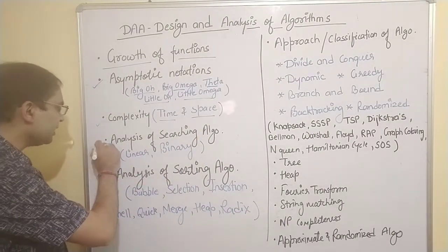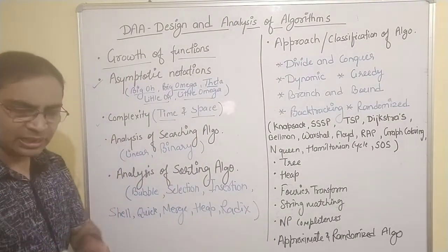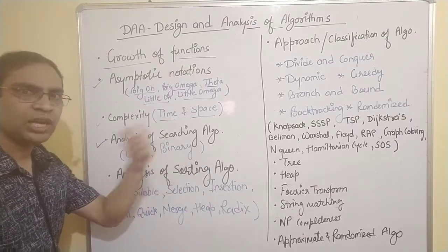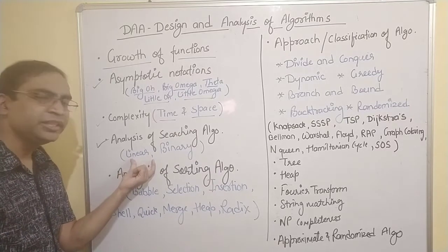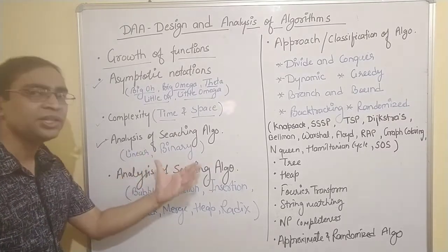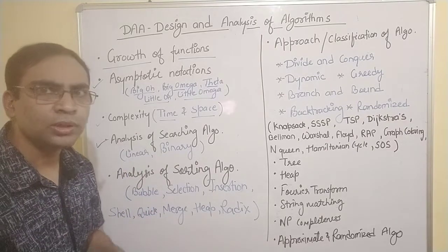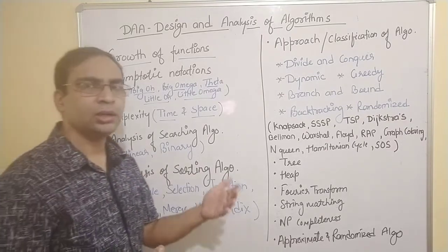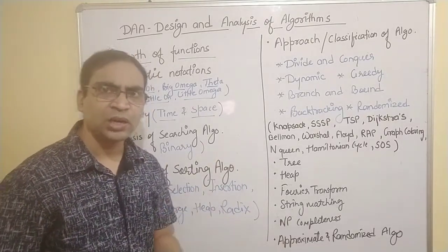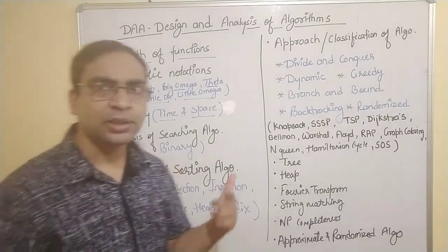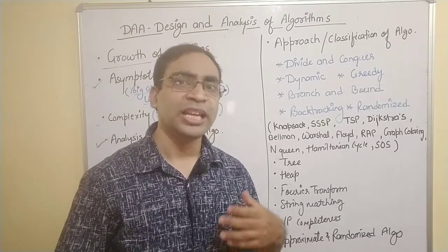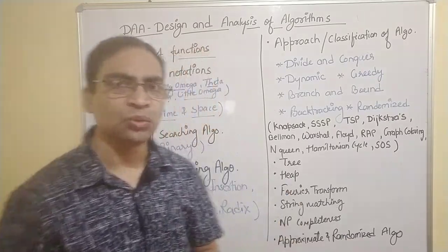We will analyze some of our main algorithms. We have already heard about linear search and binary search algorithms, but here we will analyze these algorithms — not just learn how to code them, since we have already made programs for linear search and binary search. Now we will analyze them on the basis of complexities, with the help of asymptotic notations.